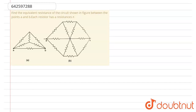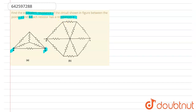In this problem, we have been given to find the equivalent resistance of the circuit shown in the figure between the points A and B. Each resistance has a resistance R. So first, focus on the diagram, which is this part.